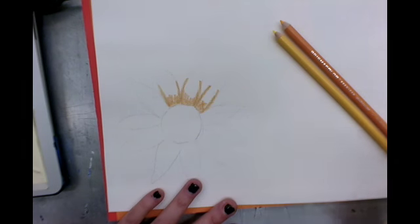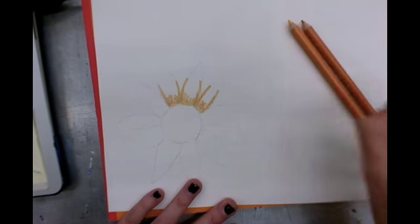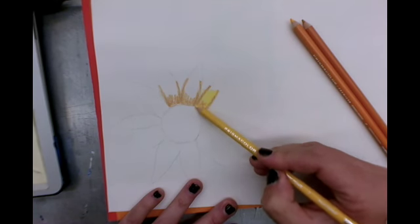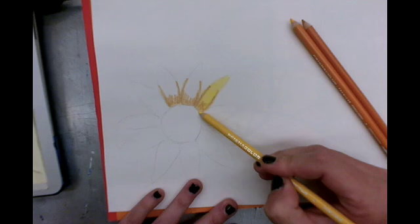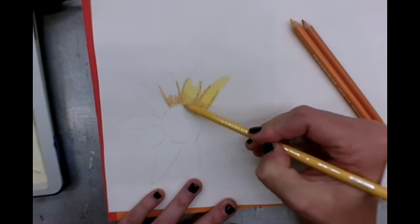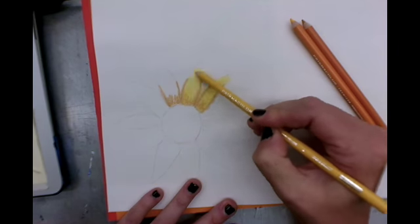So then the next thing I'm going to do is I'm going to grab my lighter shade of yellow and I'm going to kind of give the whole petal a bit of color and notice I went right over that darker yellow that I already put down.